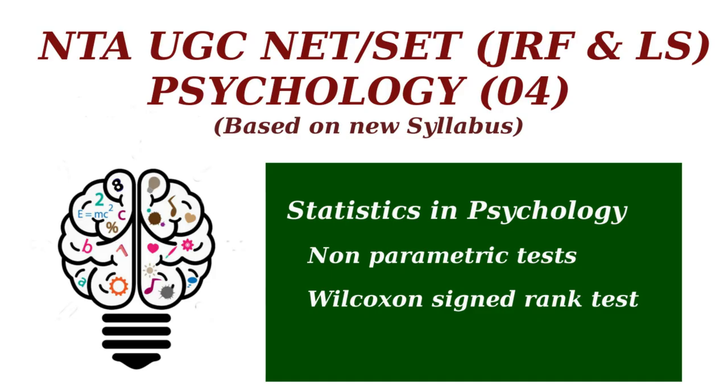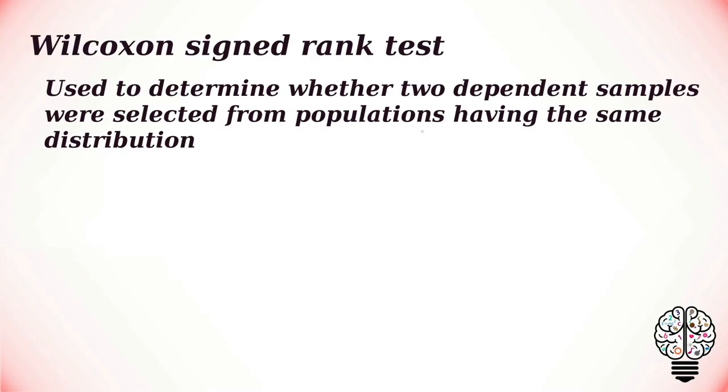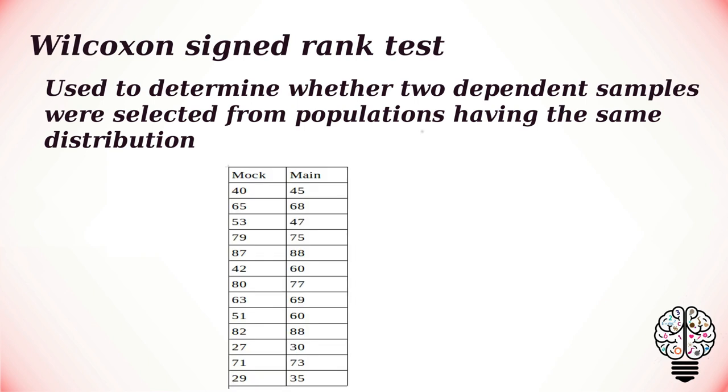Hey everyone, welcome to the psychology lecture series. In this video we are going to talk about Wilcoxon signed rank test. A Wilcoxon signed rank test is a non-parametric test that can be used to determine whether two dependent samples were selected from populations having the same distribution.